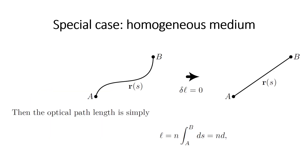For the special case of a homogeneous medium, for which n is constant, the integral is simplified as n times the integral from a to b of ds, which is nd, where d is the distance between a and b. Because n is not a function of r, we can take it out of the integral.